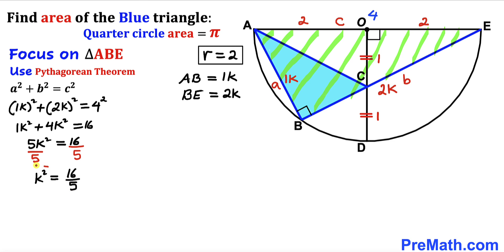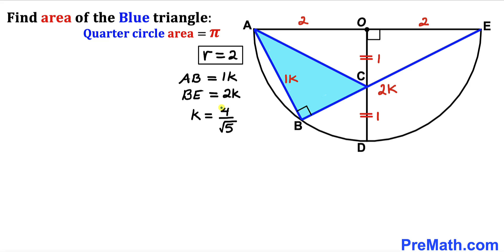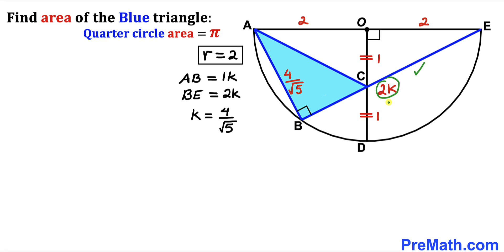Taking the square root of both sides, k equals 4 divided by the square root of 5. Since k equals 4 over √5, AB equals 1 times k, which is 4 divided by √5, and BE equals 2 times k, which is 8 divided by √5.